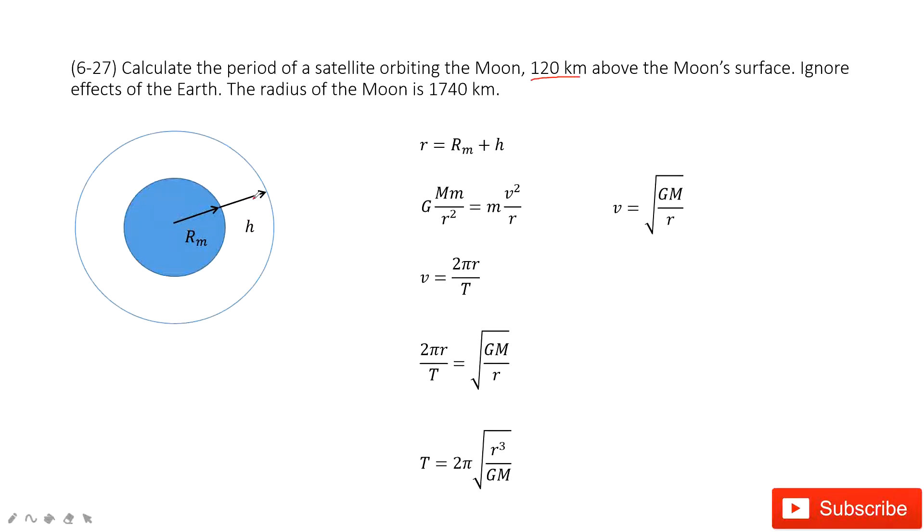This is our strategy. First thing, we look at this circular motion. The radius must include two parts: the radius of the moon and the distance above the surface. So this one will have r = Rm + h, and both of them are given.